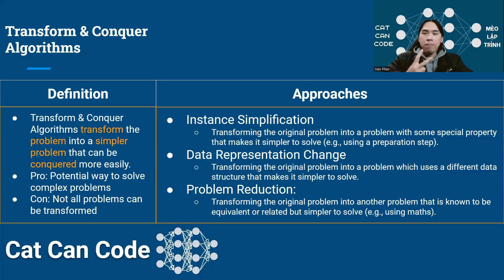The second approach is the data representation change. Transforming the original problem into a problem which uses a different data structure that makes it simpler to solve. Sometimes the way you store data will influence how you process and run algorithms on those data. By changing the way you store data, it may open up new ways that are simpler to solve.